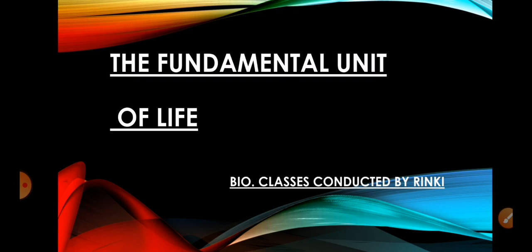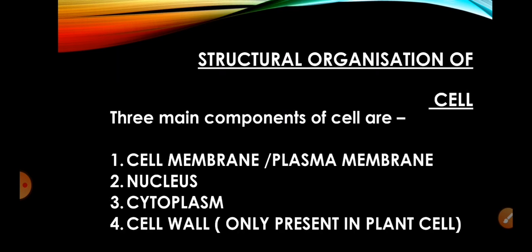Now let's start our class on structure and organization of cell, which has three components: cell membrane, also called plasma membrane, nucleus, cytoplasm, and the fourth one is the exception which is only present in plant cells, that is cell wall.